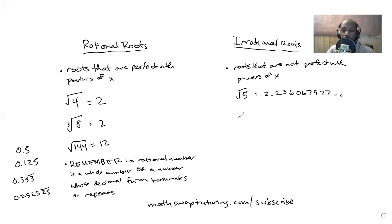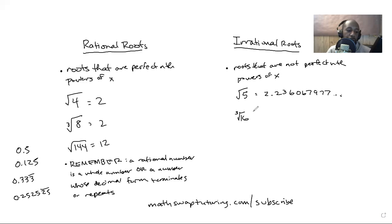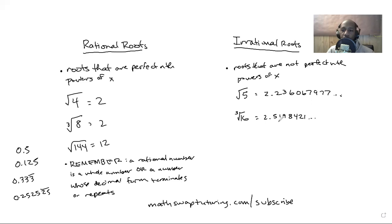Similarly, we know the square root of 16 is 4 because 4×4=16. But what about the cube root of 16 — what number times itself three times gives you 16? According to my calculator, the cube root of 16 is approximately 2.519842. So this is not a perfect cube root.